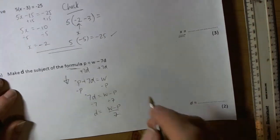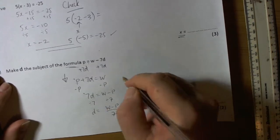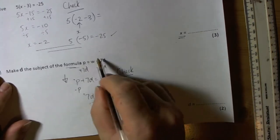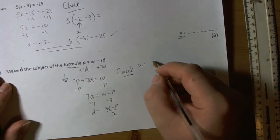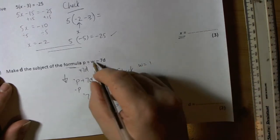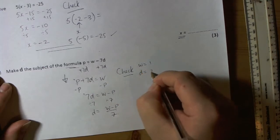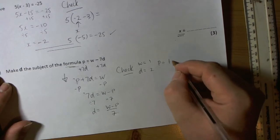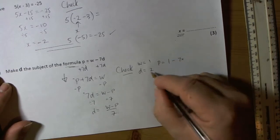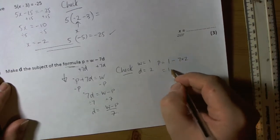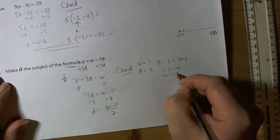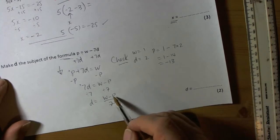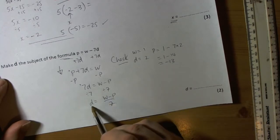Now with all algebra we really ought to check again. So the check is this: in the original formula we could give a value for w, so I'll give w a value of 1, keep it simple, and I'll give d a value of 2. So the formula said to get the value of p we do the w value take away 7 times the d value, so 1 take away 14 is negative 13. If this is true, I should be able to put the p value back in here with the w value and it should give me the same d value that I chose.